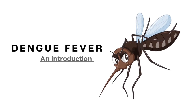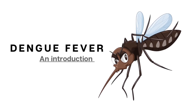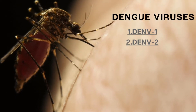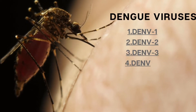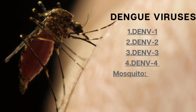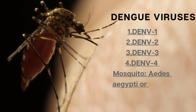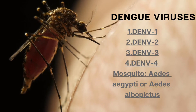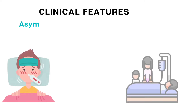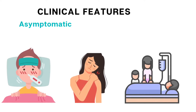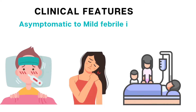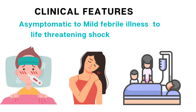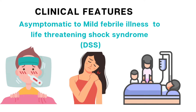Dengue is a febrile mosquito-borne illness caused by infection with one of the four dengue viruses, transmitted by Aedes aegypti or Aedes albopictus mosquitoes during the taking of a blood meal. Infection may be asymptomatic or present with a broad range of clinical manifestations, including a mild febrile illness to a life-threatening shock syndrome.